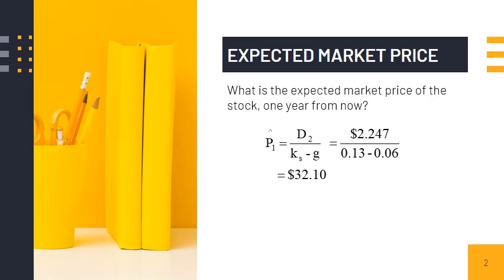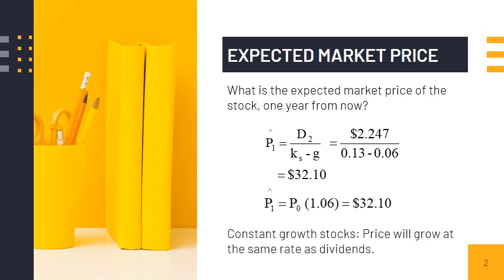An easier way to compute this is to simply multiply the previous period's price by the quantity (1 + g), or $30.29 times (1 + 6%). This is because for stocks with constant growth, the price grows at the same rate as dividends — in this case 6 percent. Another way of saying it is that the capital gains yield is equal to the constant growth rate.